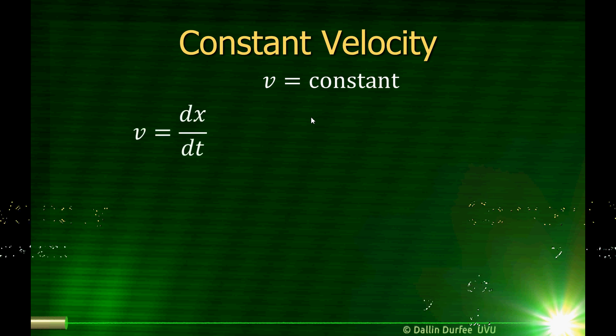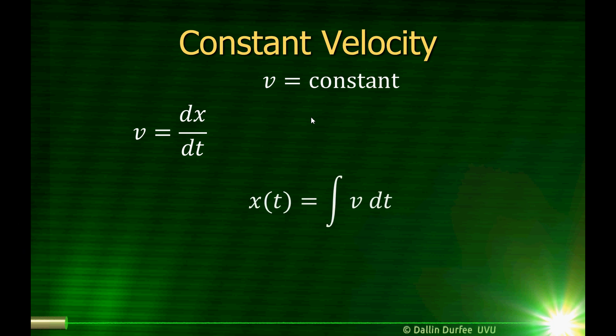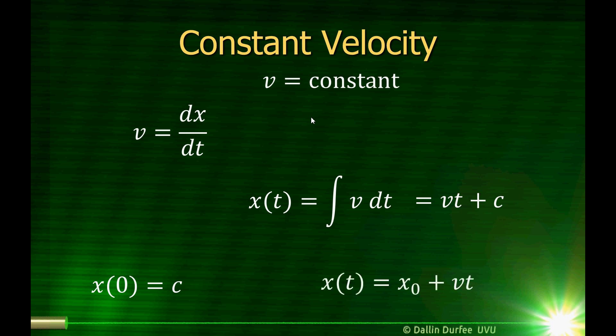If the velocity is constant, velocity is the derivative of position with respect to time, and position is the integral of velocity with respect to time. If velocity is a constant, that integral is easy to do. I just get vt, and because this is an indefinite integral, we have to add on a constant. If x equals vt plus c, at time t equals zero, x is just equal to c. So c is just the position at time t equals zero, and we will call that x-naught. So x as a function of time is just x-naught plus vt.